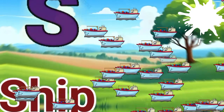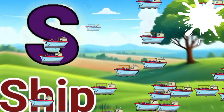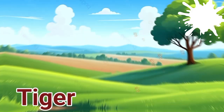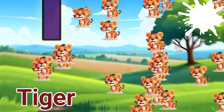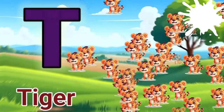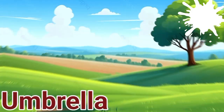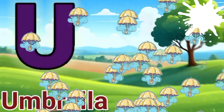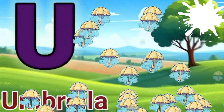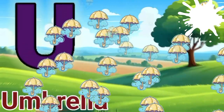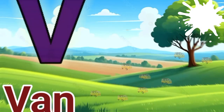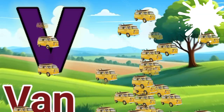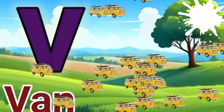S is for ship. T is for tiger. U is for umbrella. V is for van.